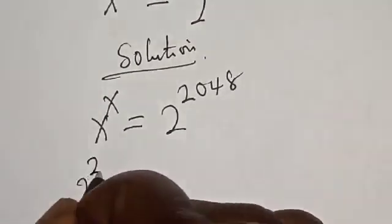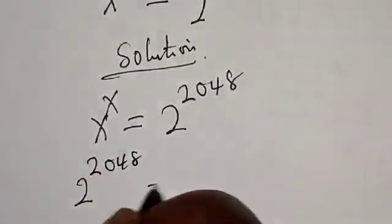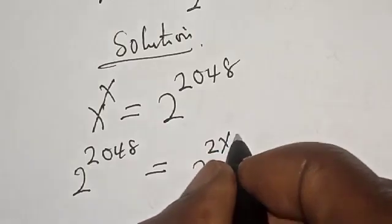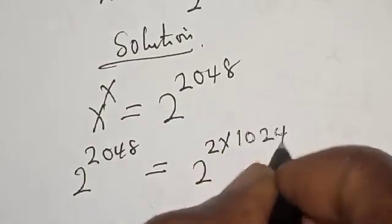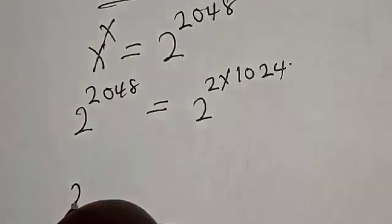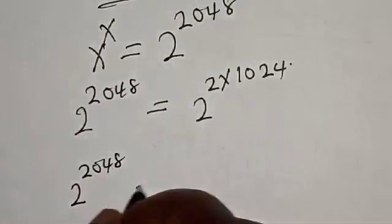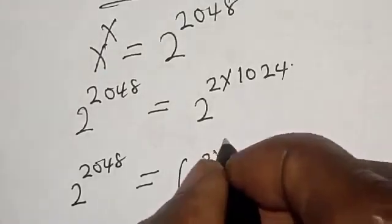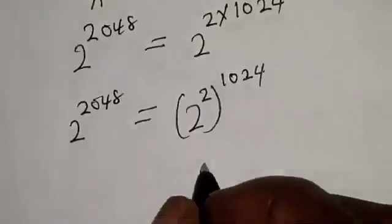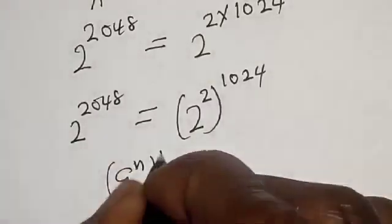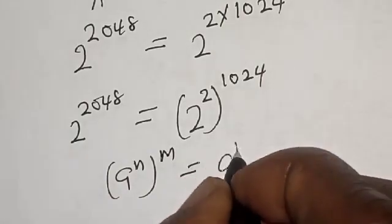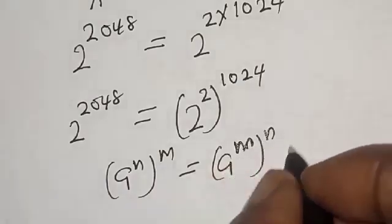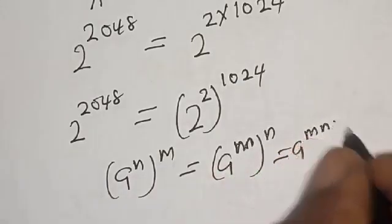2 raised to power 2048 is the same thing as 2 raised to power 2 multiplied by 1024, which is the same as 2 raised to power 2, raised to power 1024. Remember, if you have a raised to power m raised to power n, it's the same thing as a raised to power m times n.